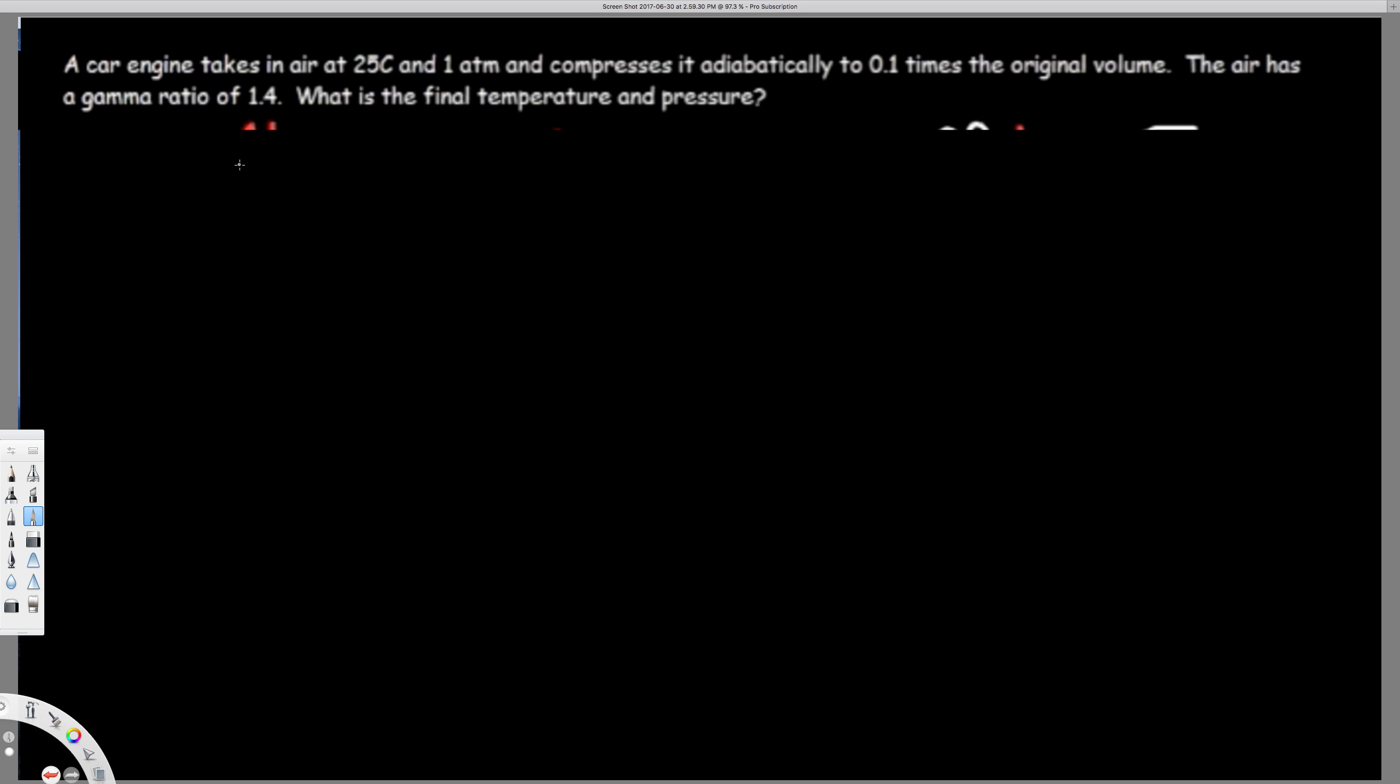First of all, let's list all the given information. We have the initial temperature T1 equals 25 degrees Celsius, and initial pressure P1 equals 1 atm. We don't have T2 and P2, so that is the question right here: final temperature and pressure.